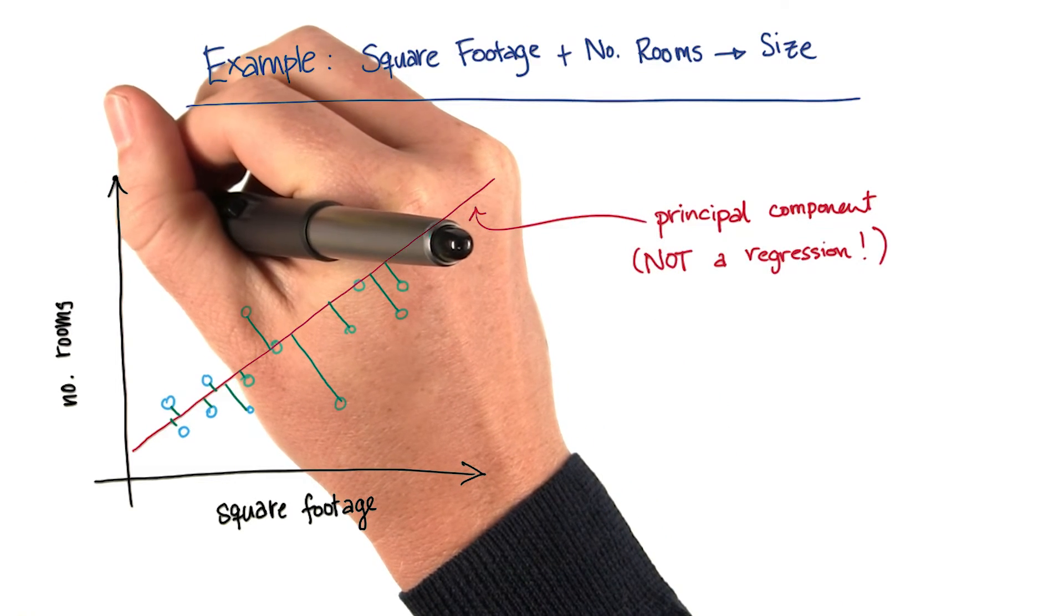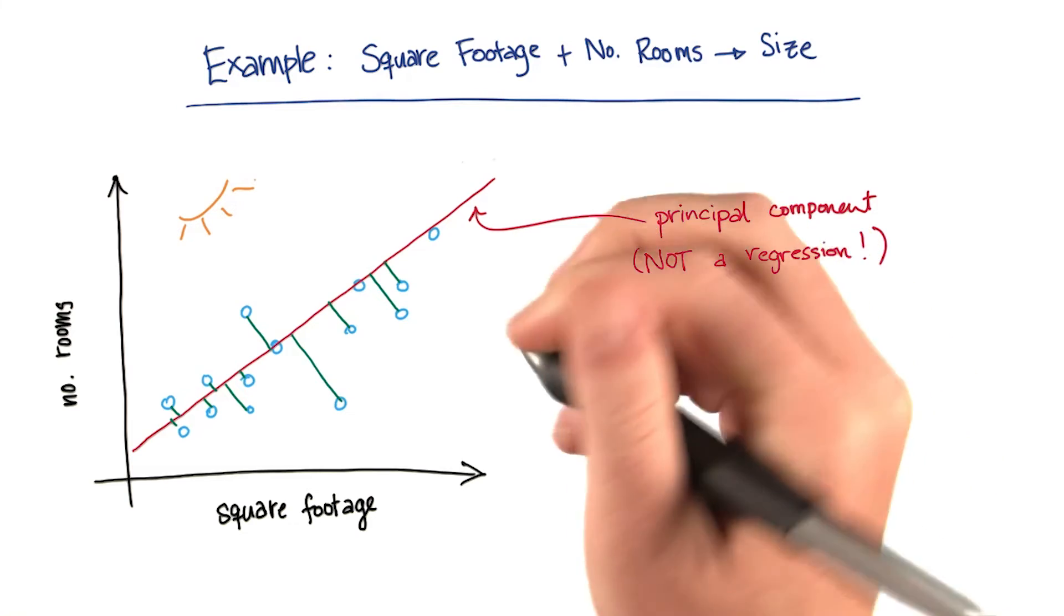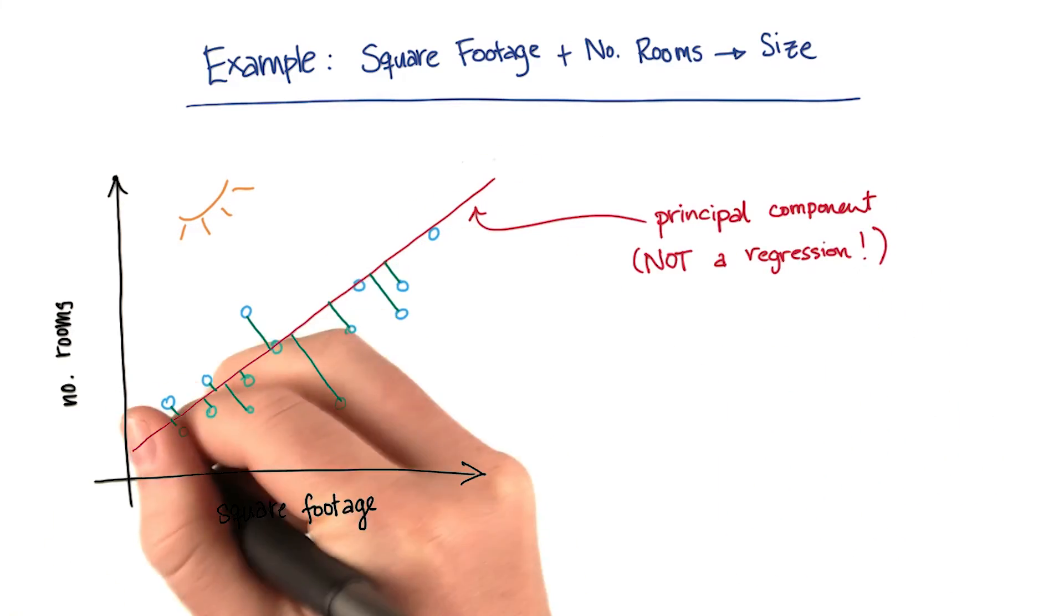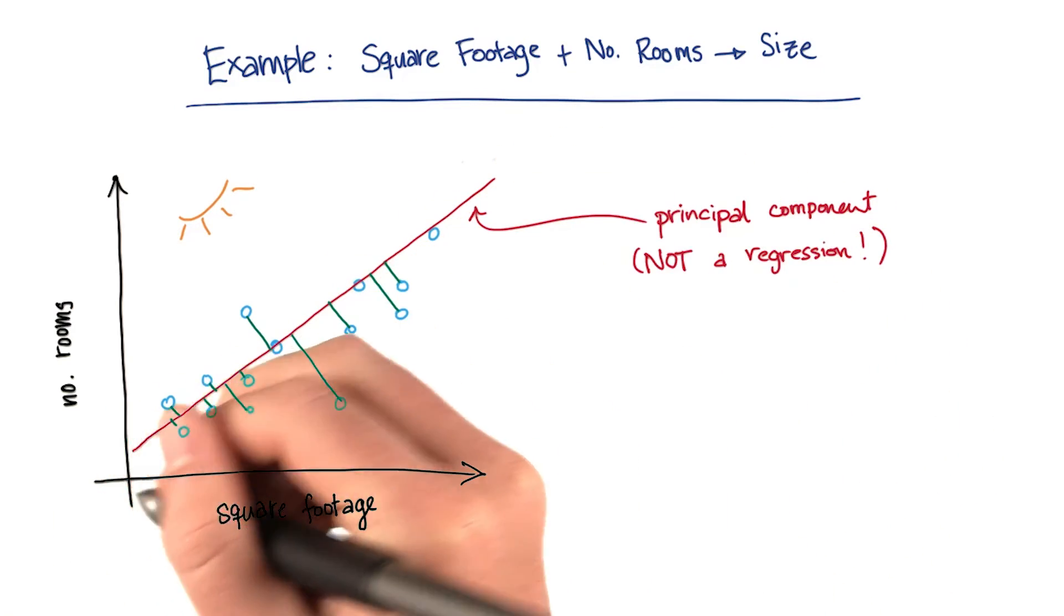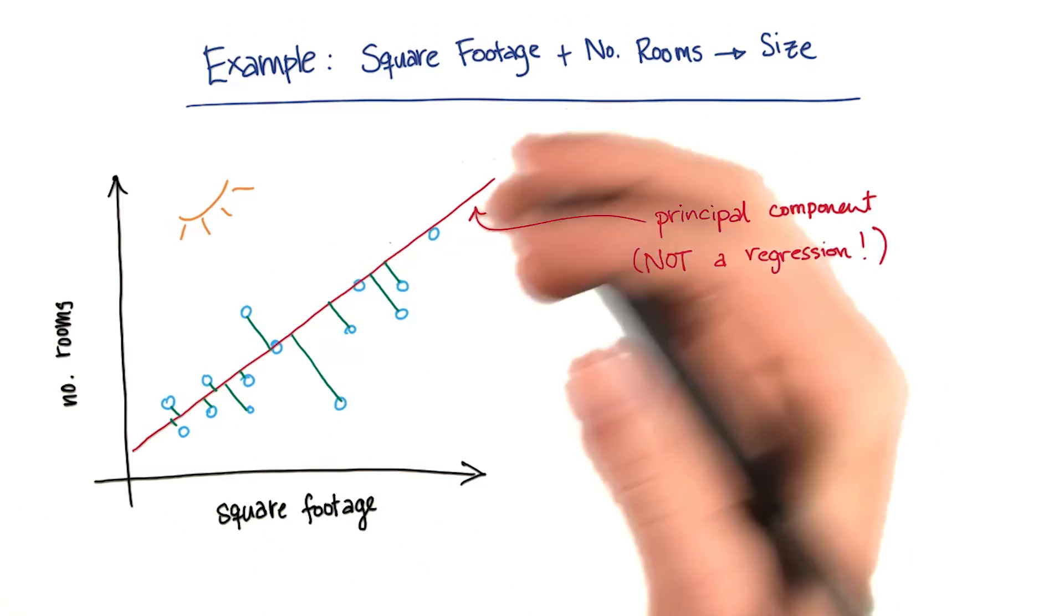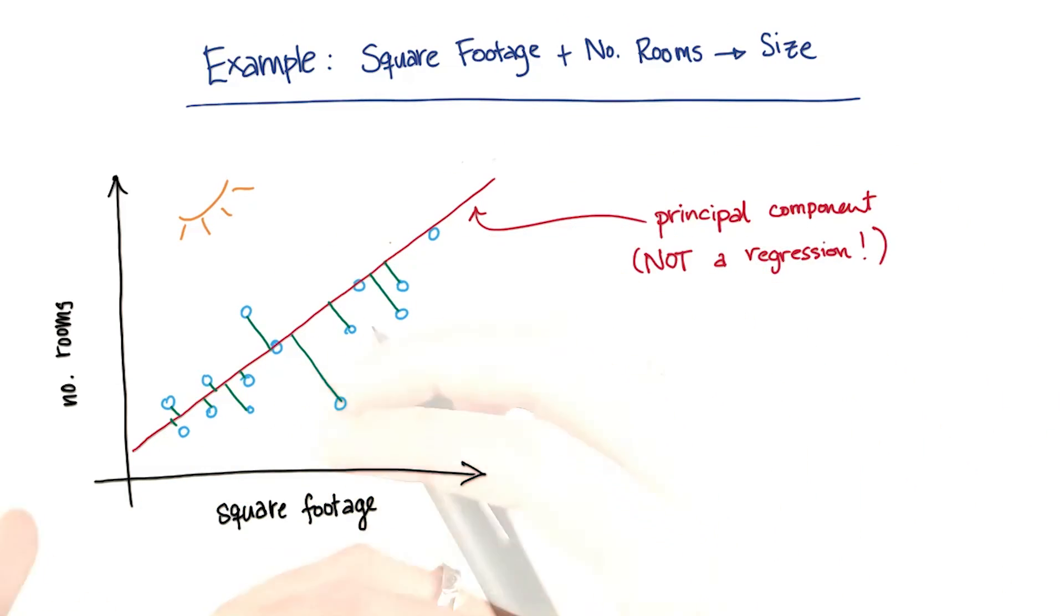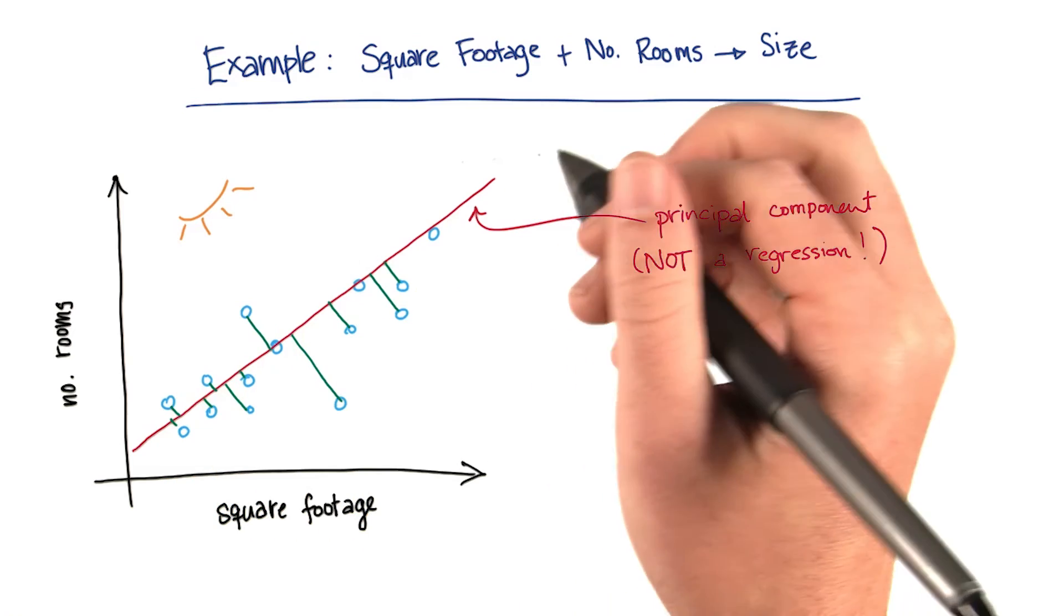And what a projection means is a little bit of a physical term almost. Imagine that I had a light, and the light is sort of shining down perpendicular to the surface of this principal component. Then you can imagine that all of the data points are going to be sort of casting shadows down onto like a piece of paper if I put it there.